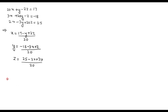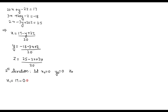Now, after writing the expressions for x, y, and z, we proceed to the first iteration. Taking x = 0, y = 0, and z = 0 as the initial values, x₁ = (17 − 0 + 2×0) / 20 = 17/20 = 0.85.